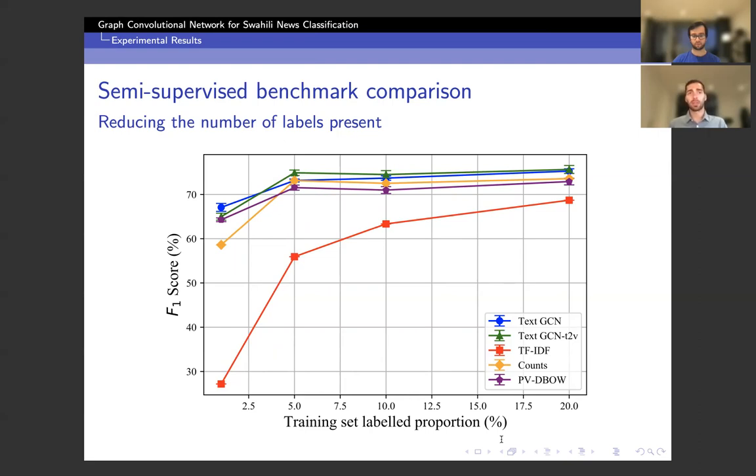And the counts model, which previously performed relatively well, has a noticeable degradation in performance as the number of training labels is decreased.